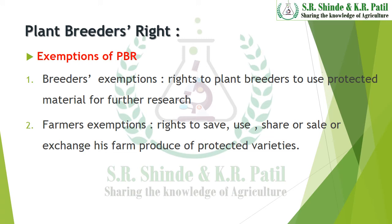There are some exemptions of plant breeder's rights. Two persons are exempted: first is a breeder, and second is a farmer. The breeder's exemption is the right to use the protected material for further research — the breeder can use the new variety under plant breeder's rights for further research to produce a new variety. The farmer is exempted and has the right to save, use, share, sell or exchange their farm produce of protected varieties.